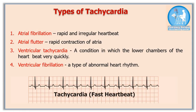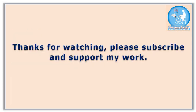Ventricular tachycardia and ventricular fibrillation are related to the lower chambers of the heart. In ventricular tachycardia, the lower chambers contract or beat very rapidly, whereas in ventricular fibrillation the lower chambers beat very rapidly but at an irregular pace.